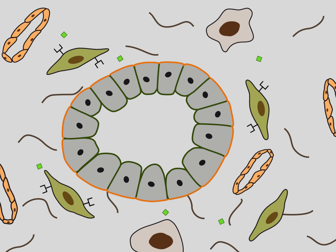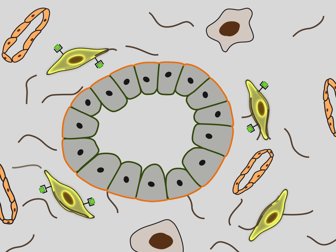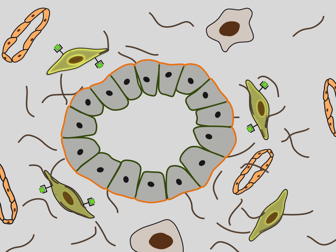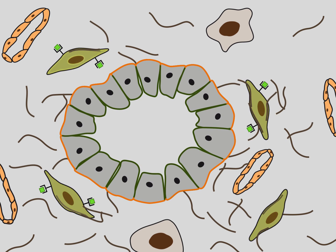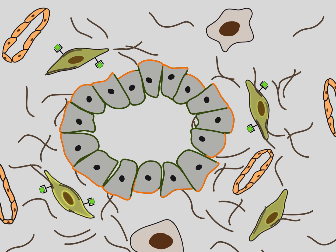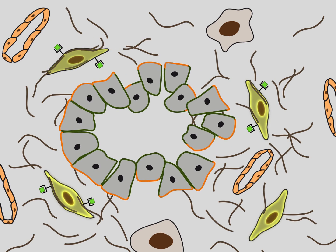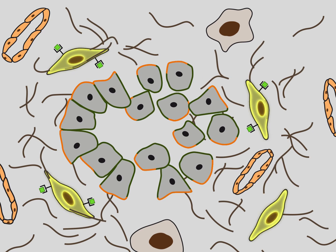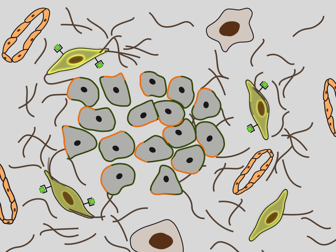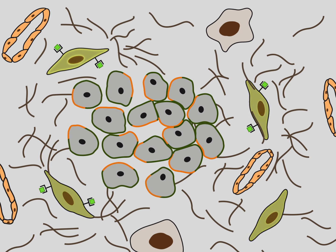With increasing collagen content and stiffness of the connective tissue matrix, the normal structure of the gland and the regular localization of E-cadherin, shown in green, and alpha-6-beta-4-integrin, shown in ocher, are lost.